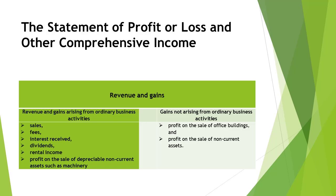An example of a gain that arises from the ordinary business activities is a profit on the sale of depreciable non-current assets such as machinery. Examples of gains that do not arise from ordinary business activities are profit on the sale of office buildings and profit on the sale of non-current assets.